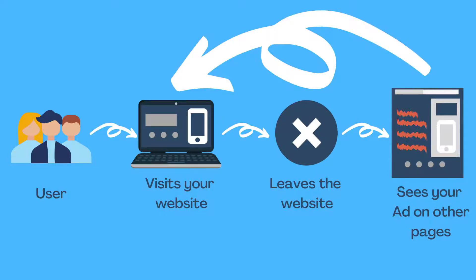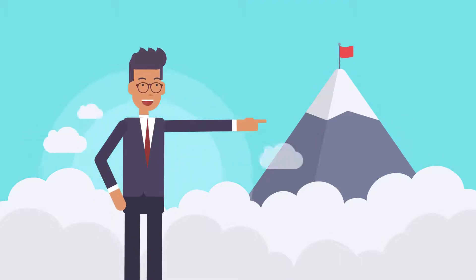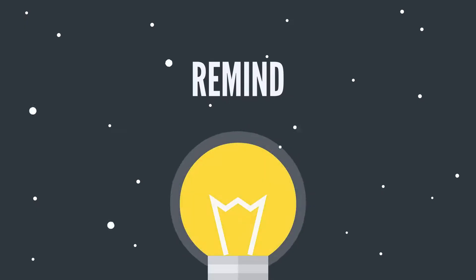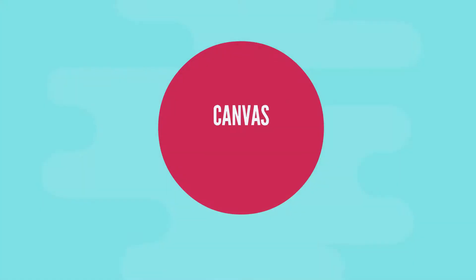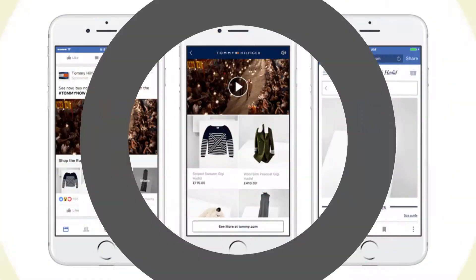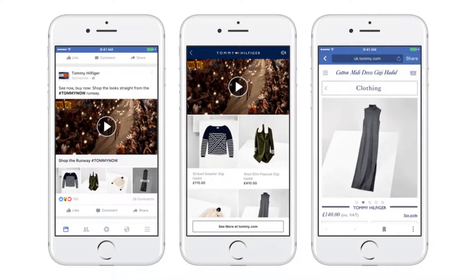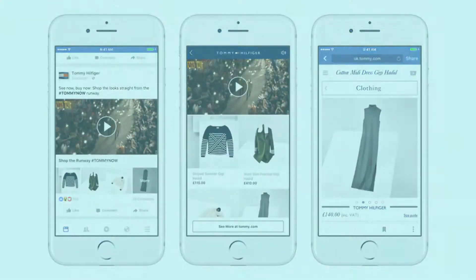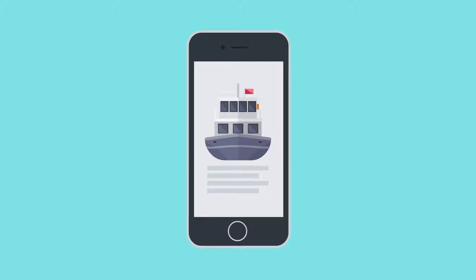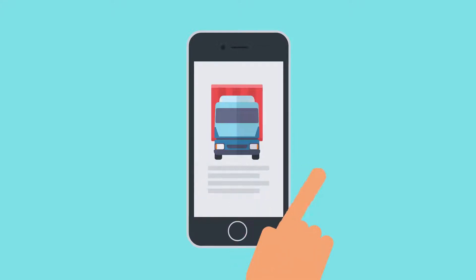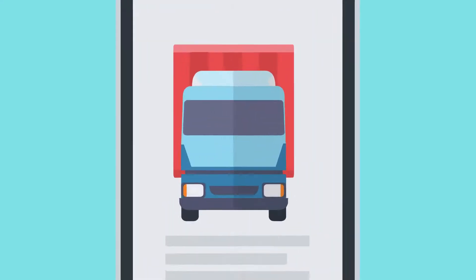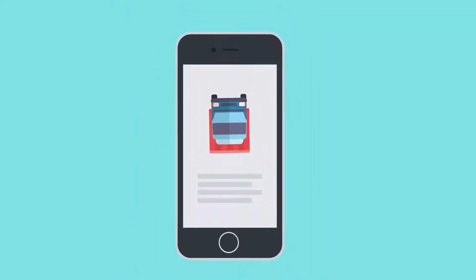Dynamic product ads display specific content to each individual based on their past actions on your website or mobile app. They are used for retargeting customers and reminding them of products they viewed but did not buy. Canvas ads are interactive, enabling your audience to engage with your post via mobile — swiping through images, zooming, or rotating.